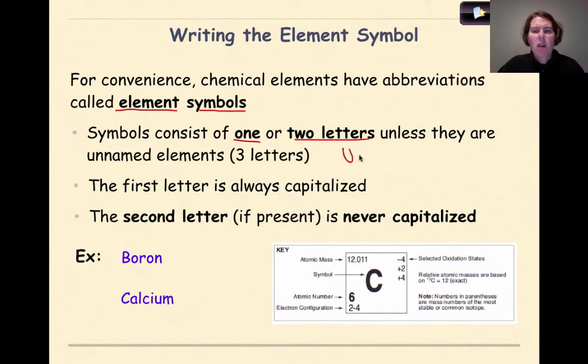Something like Uuu, or another option might be Uub. These are unnamed elements whose names are still to be determined.